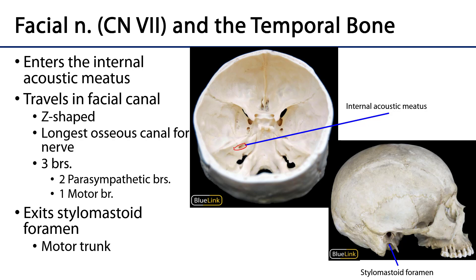Within the canal there are going to be three branches. Two of them are going to be parasympathetic branches — they will conduct pre-ganglionic parasympathetic fibers. The other will be a motor branch. The remainder of the nerve will continue on to exit through the stylomastoid foramen as the motor trunk.